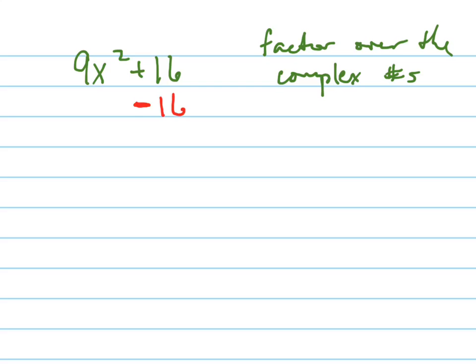You can turn 16 into negative 16 i squared, because i squared is negative 1. And if you do that, this looks very familiar. It should look very familiar. It's a difference of perfect squares.